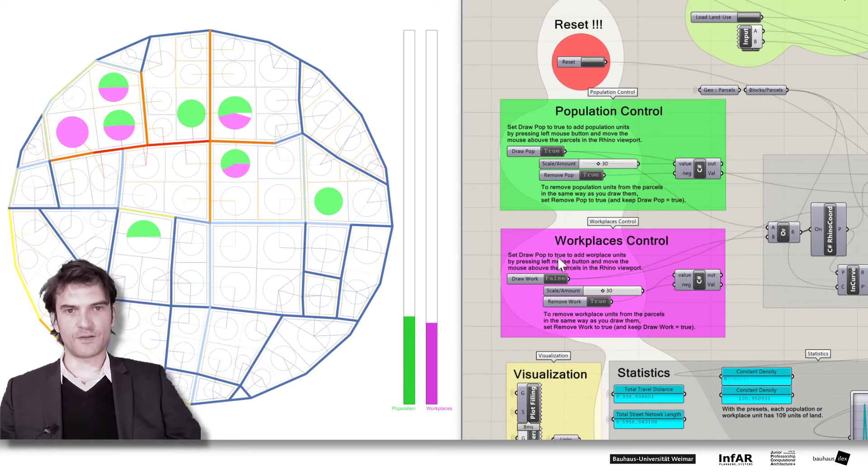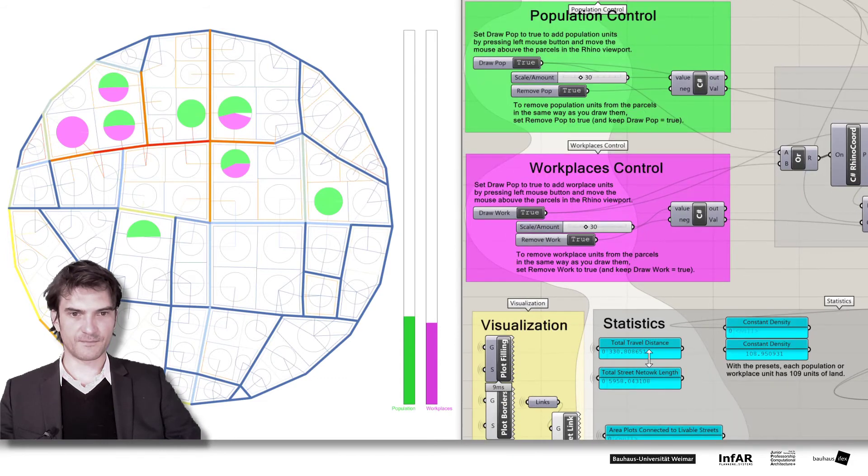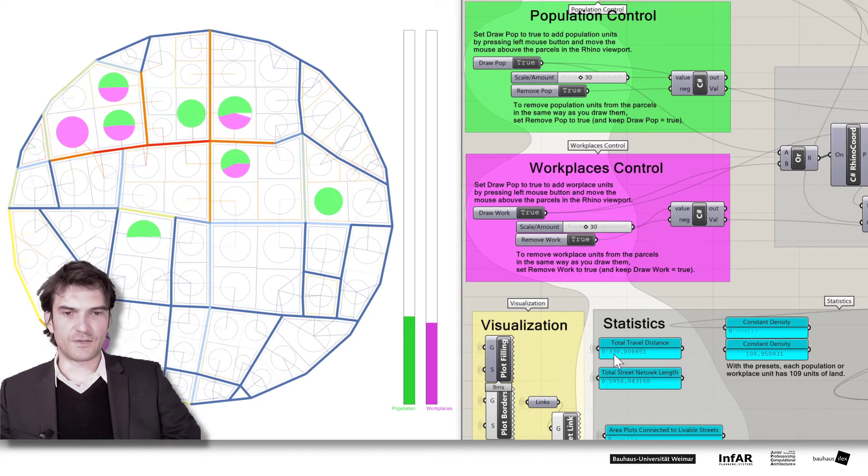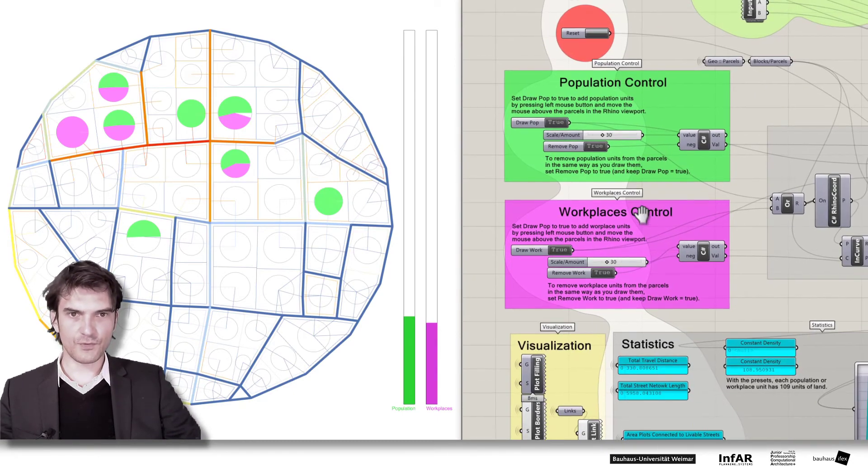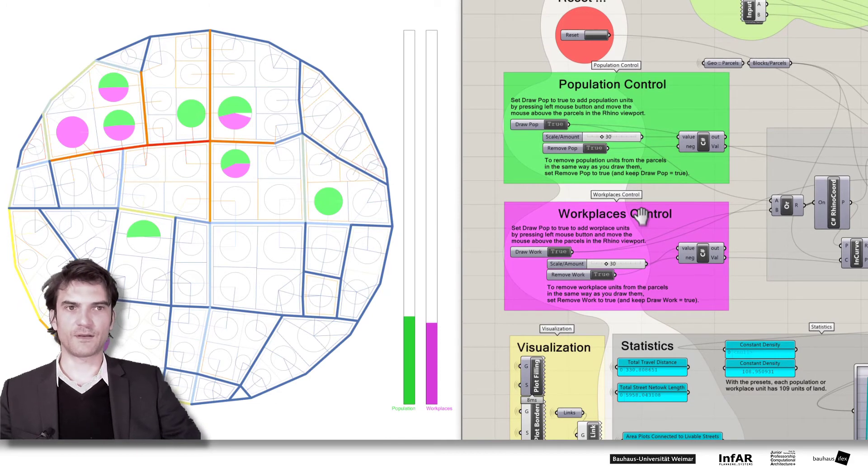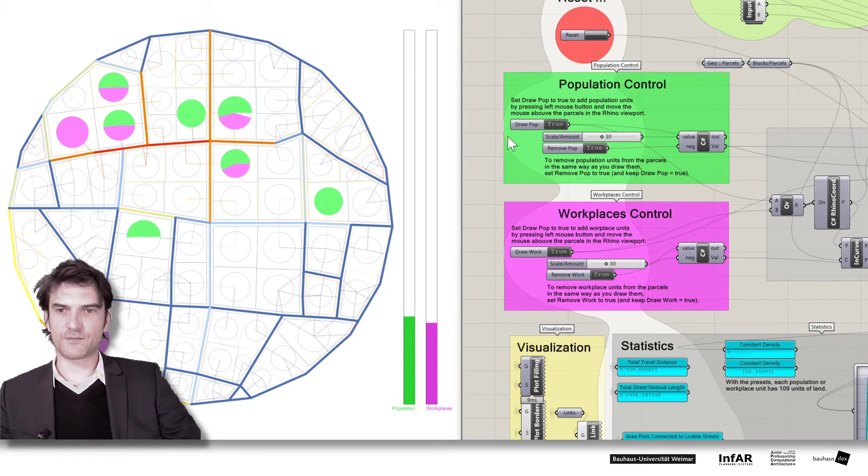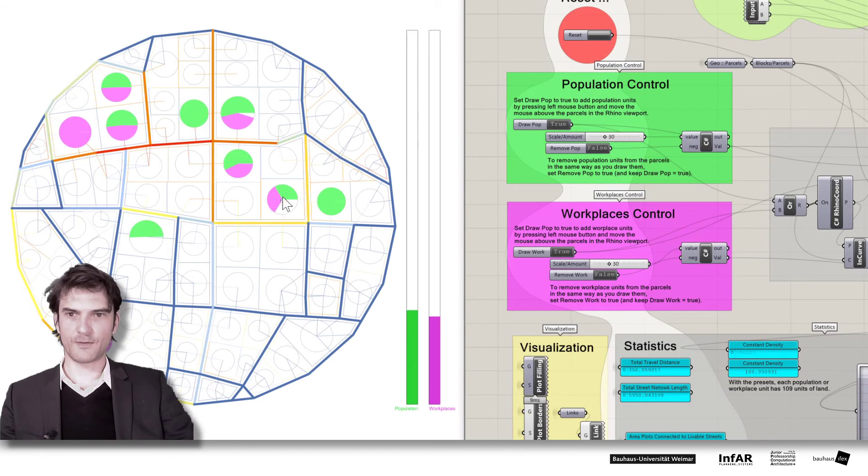Okay. So what you may have seen is at the moment when you draw land uses you will get here the average travel distance updated. So now we have 330 units of travel distance. So it doesn't matter what these units are, kilometers, meters, independent. We only want to minimize this value. And the idea of the model is that you have some challenge and that you have to distribute these 1000 units. So means you have to fill up population and workplaces, these bars to 100%, by drawing here your units in the model.